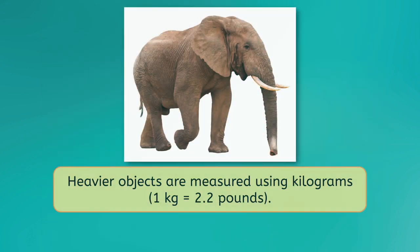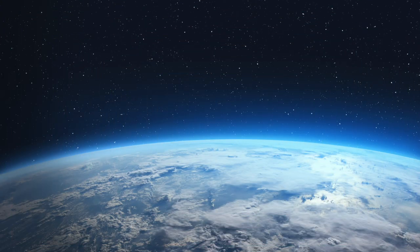Heavier objects like a person or even an elephant are measured in kilograms. Keep in mind other prefixes may be used to measure other objects, such as things that are really really large like planets, or things that are really really small like bacteria.